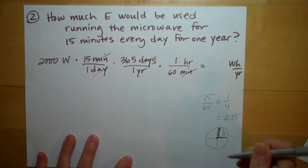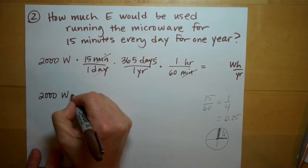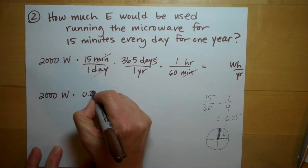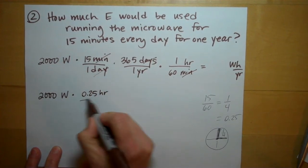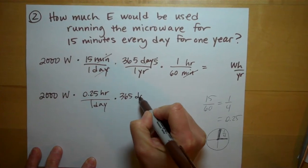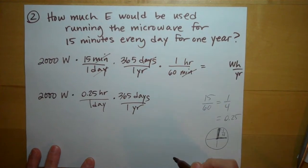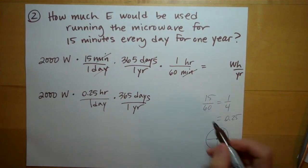If this is our clock, 15 minutes is a quarter of an hour. So you could have done 2,000 watts times a quarter of an hour every single day times 365 days in the year. And skip this step entirely, or just done it in your head.